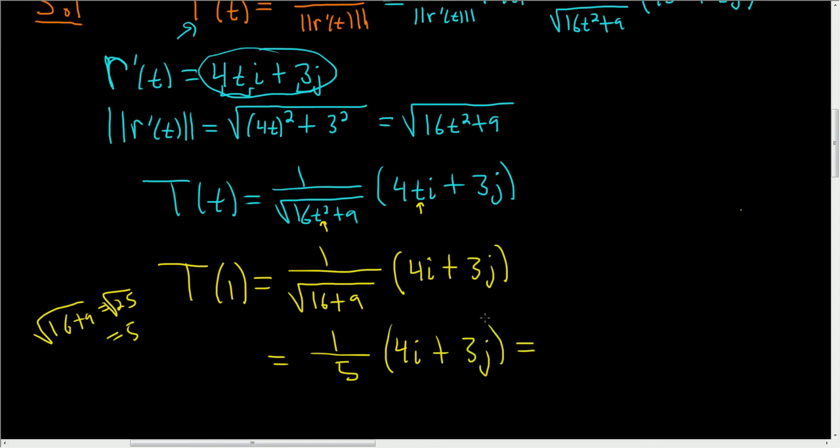You could leave it like that, but let's write it as 4/5 i plus 3/5 j. That is the final answer.